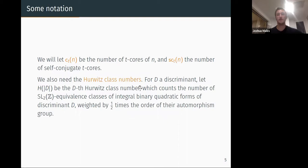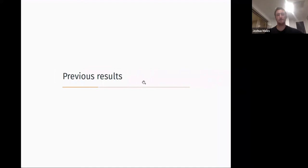We'll also need these Hurwitz class numbers. So if D is a discriminant, H of mod D, so for us this will always be positive, be the Hurwitz class number. What does this do? As everyone knows, this just counts the number of SL2 equivalence classes of binary quadratic forms, weighted by some automorphism group.